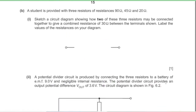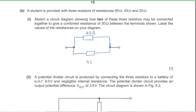Part B: three resistors of 90 Ω, 45 Ω, and 20 Ω are available. Part 1: sketch a circuit giving combined resistance 30 Ω. Since 30 Ω is lower than any individual resistor, two must be in parallel. Connecting 90 Ω and 45 Ω in parallel: (90 × 45) / (90 + 45) = 30 Ω.